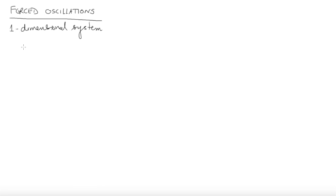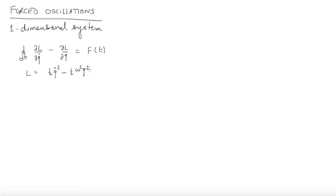Let us look at the equation of motion for such a system. The Euler-Lagrange equation will be d/dt (∂L/∂q̇) minus ∂L/∂q equals the generalized forces. The Lagrangian of my system will be described by (1/2)q̇² minus (1/2)ω²q², where ω is the natural frequency of the system. I have chosen coordinates such that the coefficient is just one-half and everything else has been absorbed into q. Here f is the generalized force.